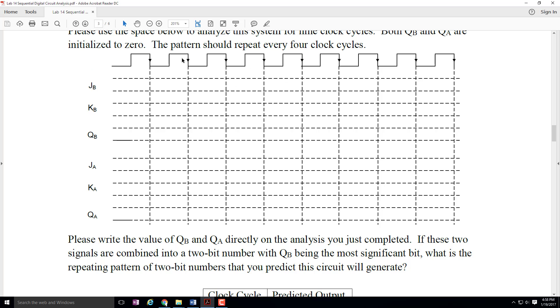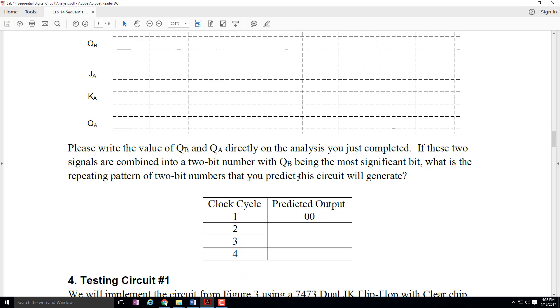You'll notice here that there are time steps numbered 1 through 9. This pattern should repeat every four clock cycles. So you'll get to see, it'll start with 0, 0. That much I'm guaranteeing you, because Q sub A and Q sub B are both preset to 0. And then as we move forward, it will cycle through a pattern that is four values long.